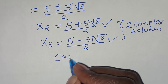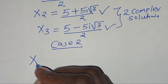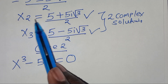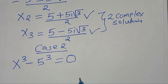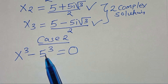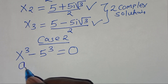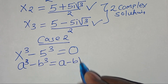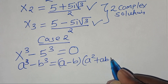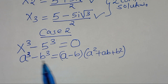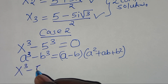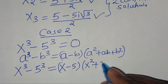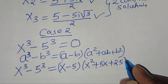Let's quickly solve case 2, which is x to power 3 subtract 5 to power 3, this is equal to 0. This is in the form of a cubed minus b cubed, which we can express as a minus b, times a squared plus a times b plus b squared. Applying this identity, x to power 3 minus 5 to power 3 will be expressed as x minus 5, times x squared plus 5x plus 5 squared, which is 25, this is equal to 0.